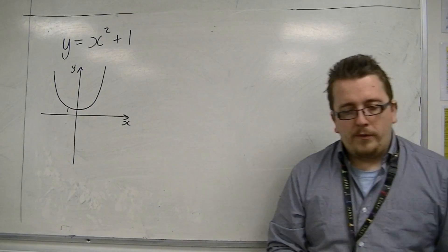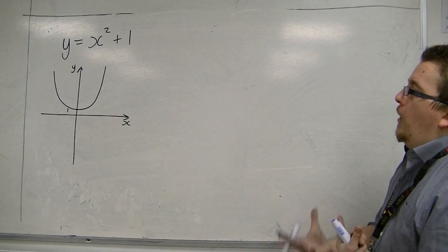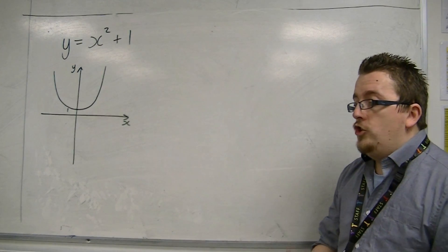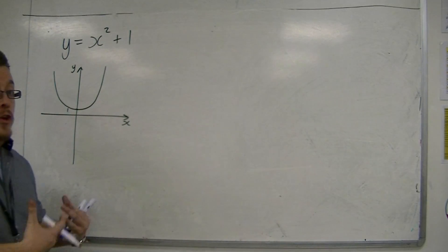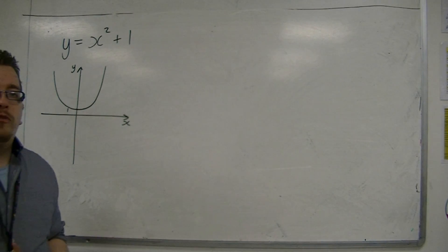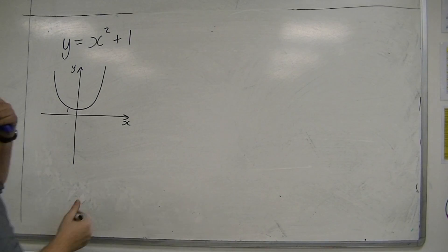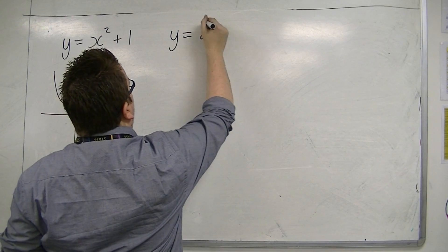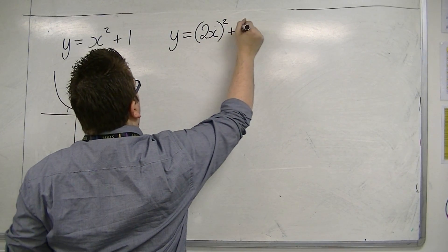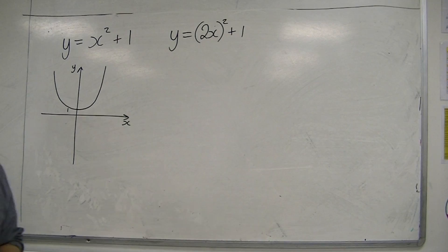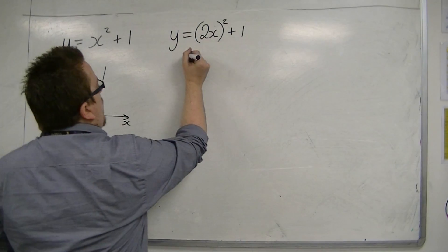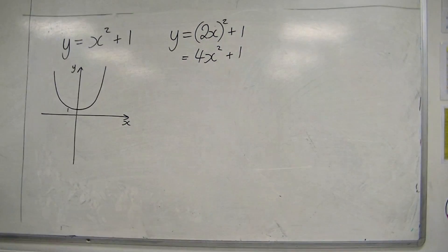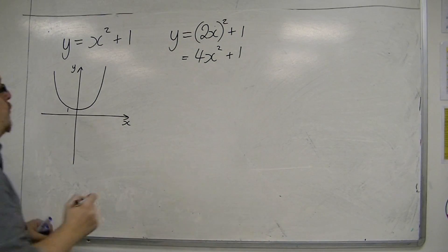What I want to do is investigate what certain things will do if I change x to, for example, 2x. What difference will that make to the curve? If I now replace the x with 2x, I get y equals 2x-squared plus 1. If I multiply that out, that's 4x-squared plus 1.